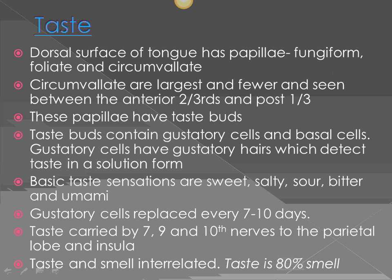The circumvallate papillae are really large. They are present at the junction between the anterior two-thirds and the posterior one-third of the tongue. All three types of papillae — fungiform, foliate, and circumvallate — have taste buds in them. The taste buds have special receptor cells called gustatory cells, which have little hairs. Those hairs get stimulated when food in solution form contacts the tongue, stimulating gustatory cells that lead to the 7th, 9th, or 10th cranial nerves, which take it to the parietal lobe and insula.